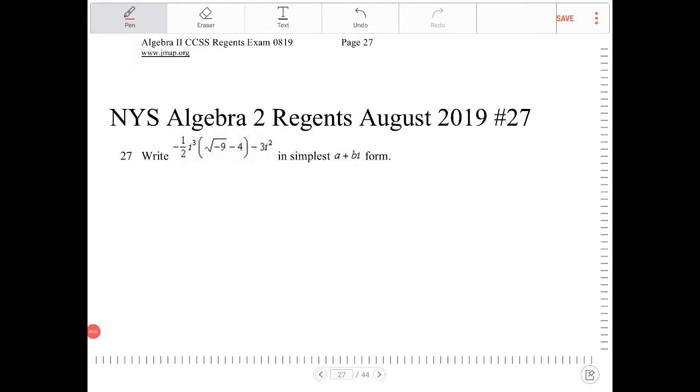Write negative one-half i to the third multiplied by radical negative nine minus four subtracted by three i squared in simplest a plus bi form. So to answer this question, we have to know how to operate and work with imaginary numbers here.